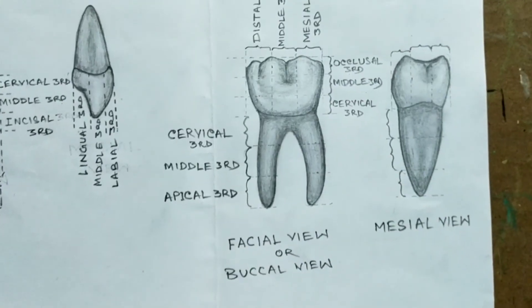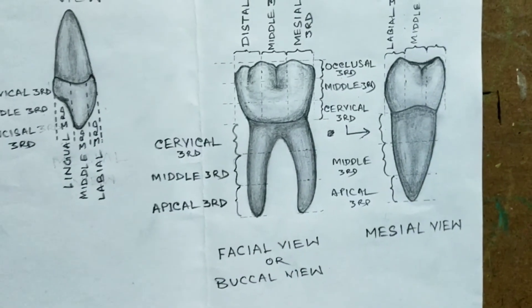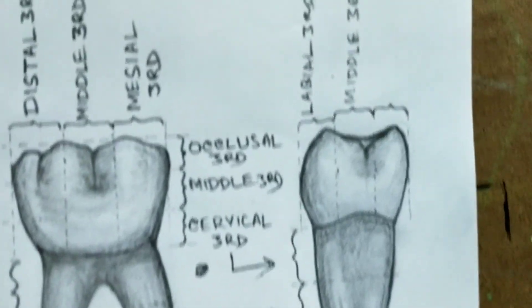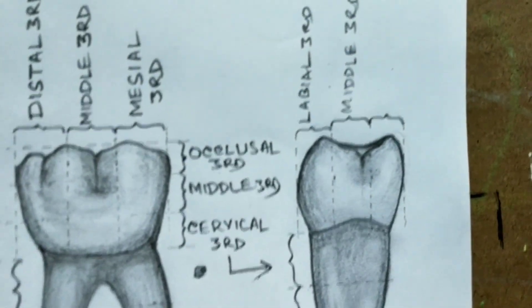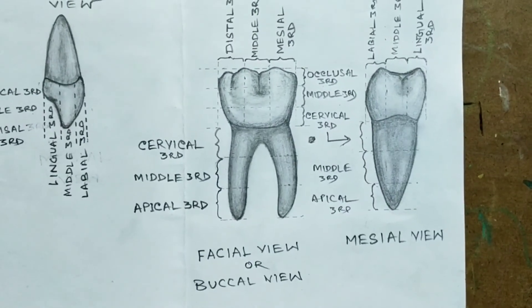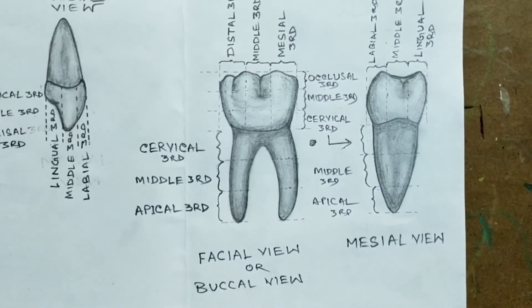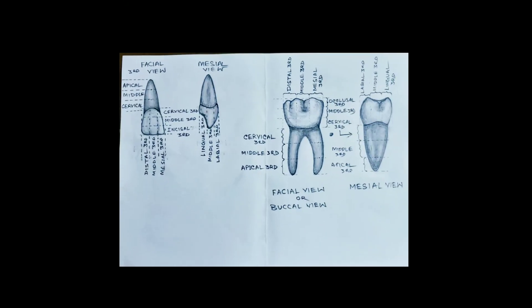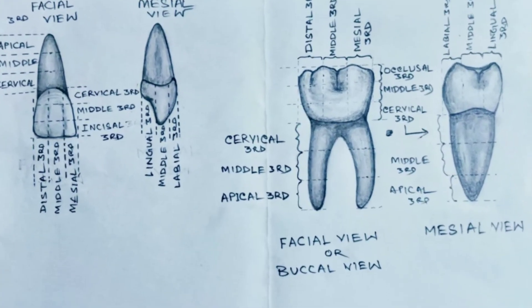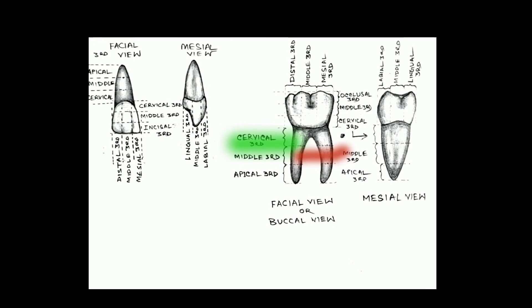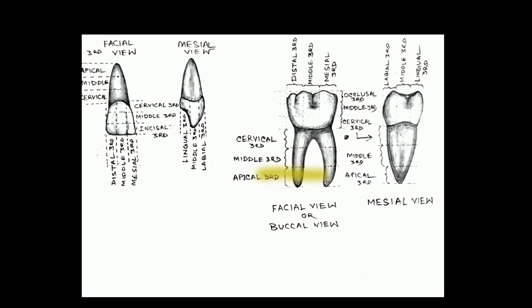Here we see occlusal third, middle third, and cervical third of the crown. Roots also have three divisions: first the cervical third, then the middle third, and finally the apical third.